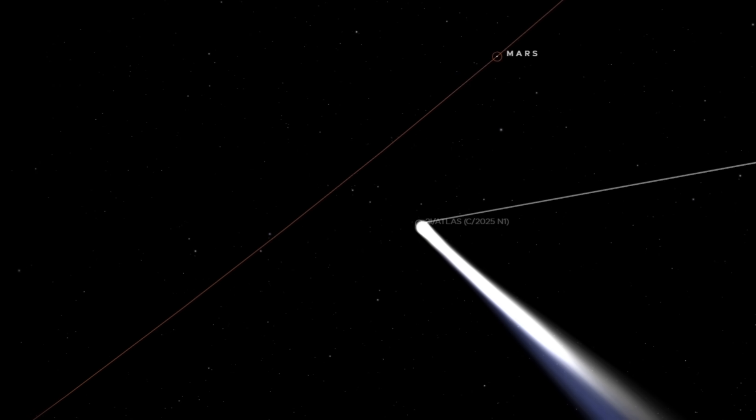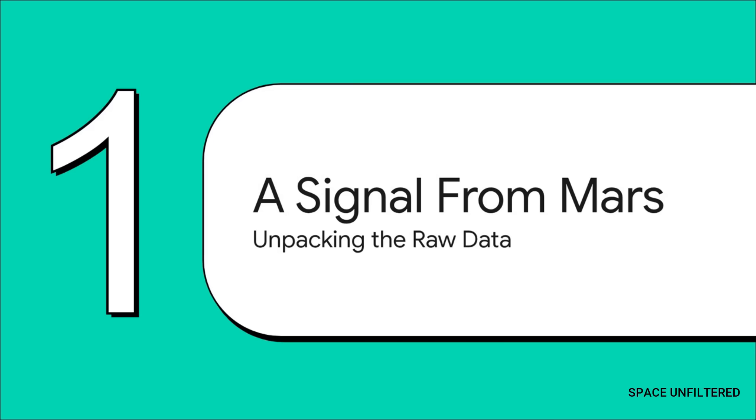To figure this out, we can't just guess. We've got to follow the evidence, and that starts with the data. Right, so before we dive into any theories, we need to go to the source. The raw, unprocessed image file that the rover sent home. This is our ground zero, the start of our whole investigation.